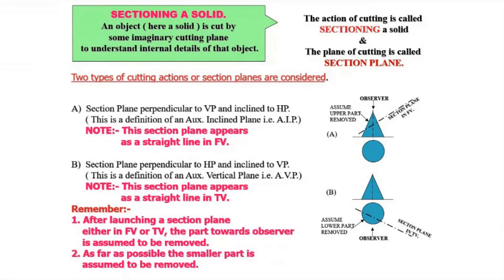What we want to find out is the true shape of that particular section — the newly generated surface. The action of cutting is called sectioning, which is why this module is known as sections of solids. The plane which is cutting this solid is known as the section plane.